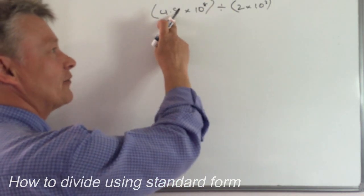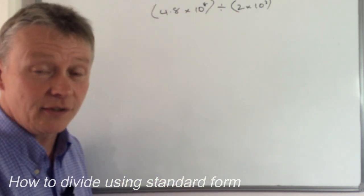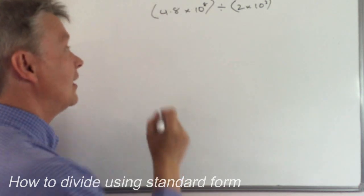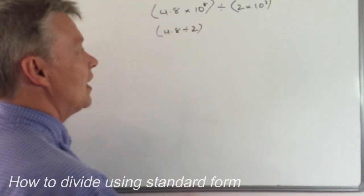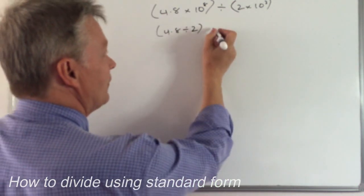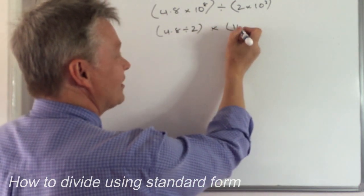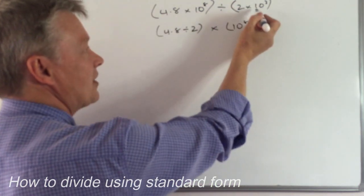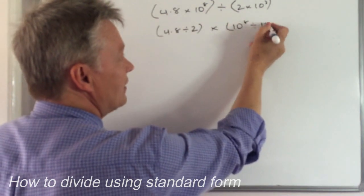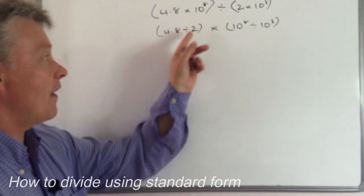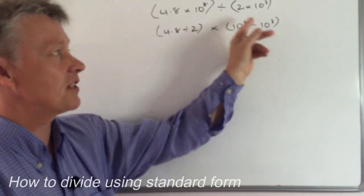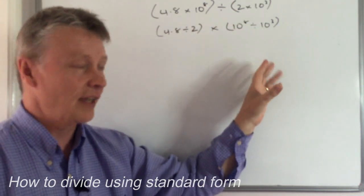But firstly I need to deal with this 4.8 divided by 2, so I'm going to put those two together. So I'm going to put 4.8 and that's divided by 2. Now my standard form part of it is written as times 10 to the power of 8 and this is divided by 10 to the power of 3. So what I'm doing is I'm dealing with the numbers and then I'm dealing with the standard form elements of it.